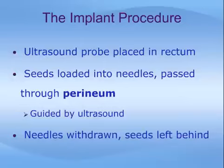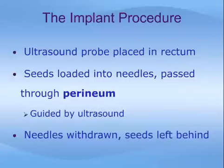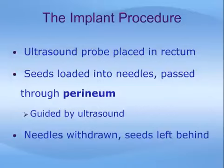Once the patient is anesthetized, an ultrasound probe is placed in the rectum and the prostate is inspected using sound waves to guide the placement of brachytherapy seeds. The seeds are loaded into individual needles and passed through the perineum — the area between the scrotum and anus — and into the prostate. As the needles penetrate the prostate, they are seen on the monitor and accurately guided to their predetermined positions. When each needle is in its correct position, the needles are slowly withdrawn, leaving the seeds behind. A catheter will remain temporarily in the bladder to help drain urine.